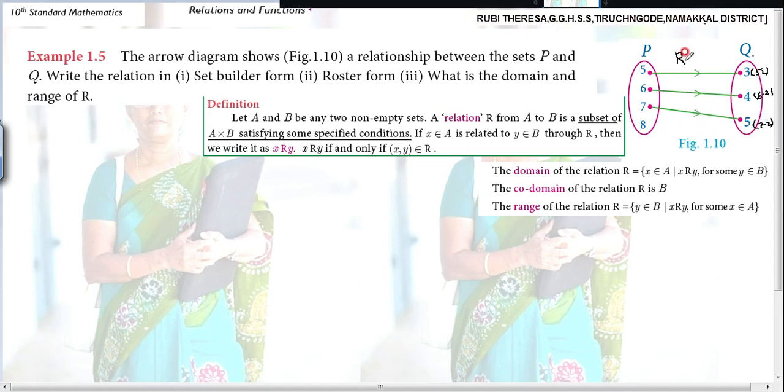In general you have to represent because set builder form is a general form. You have to specify a variable, with the help of that variable you build a set under some condition, a rule it should satisfy. Here set builder form, R equal to - it satisfies the condition. It is a subset of A cross B, the Cartesian product, so it should be in ordered pair.